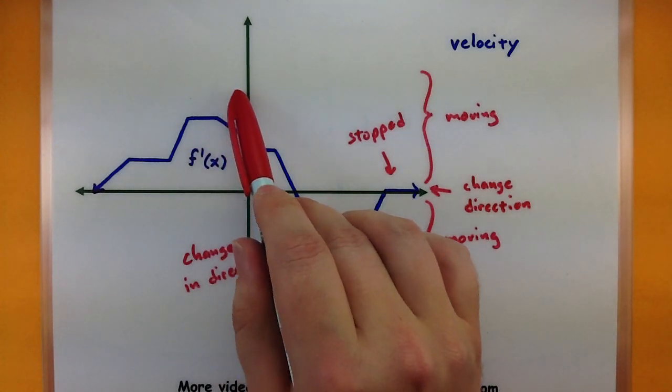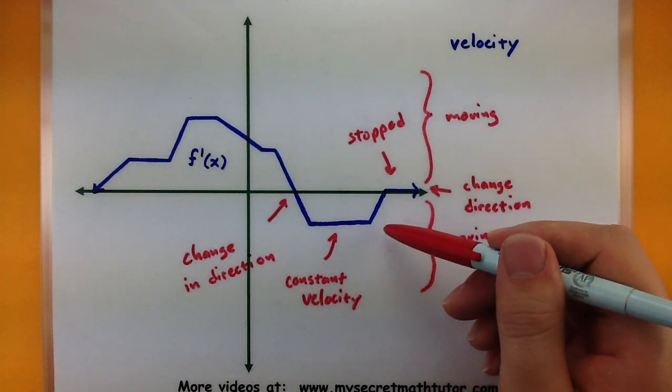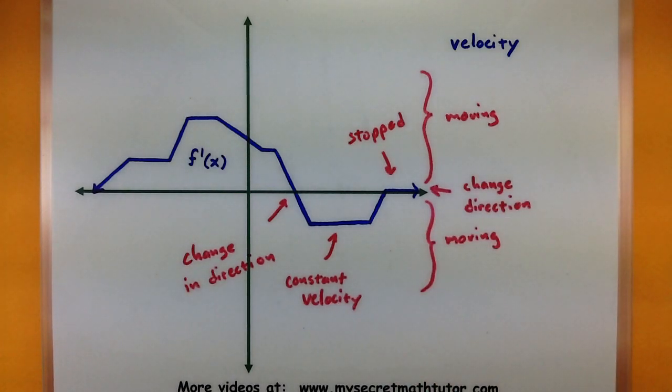The further down below, the faster we're going in negative, so just in the other direction.